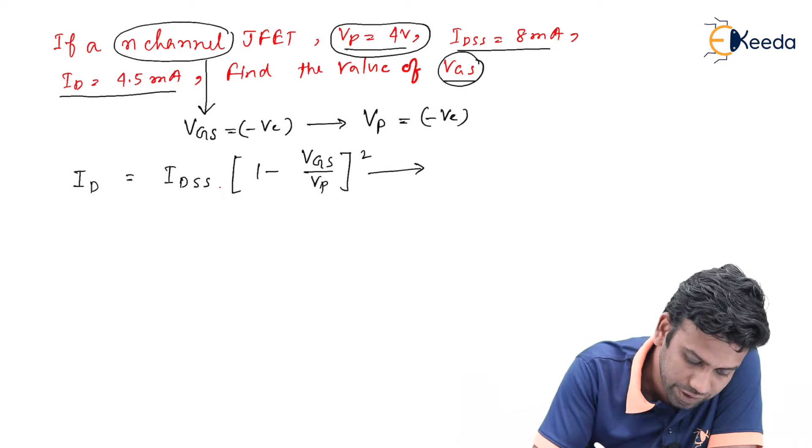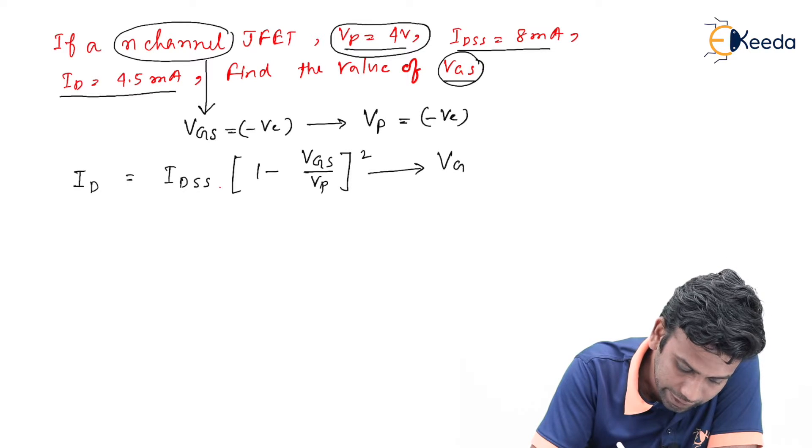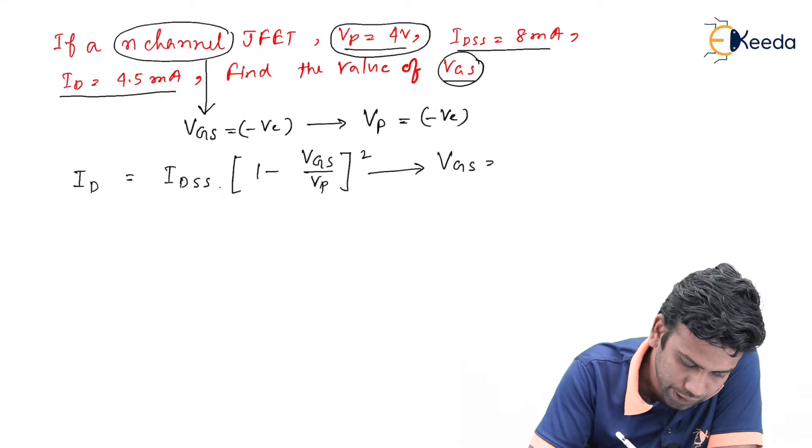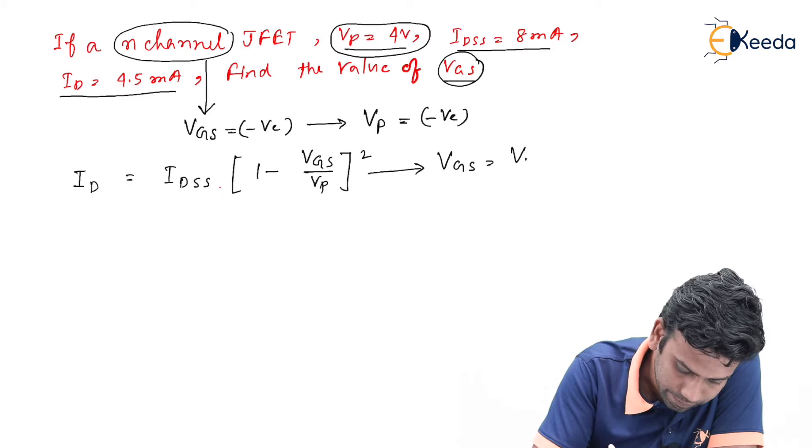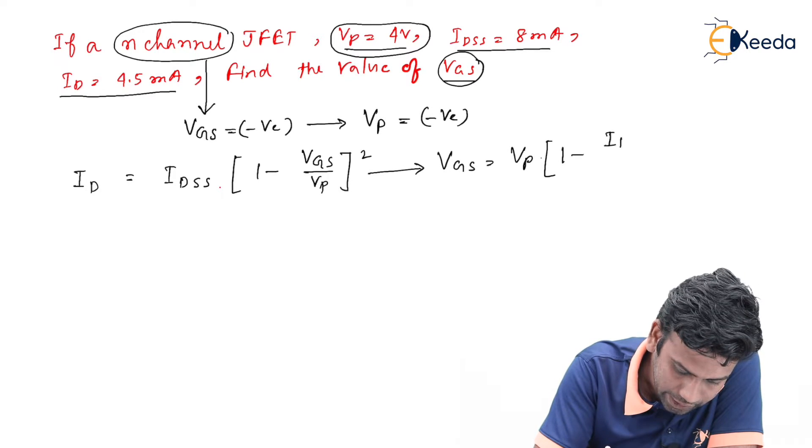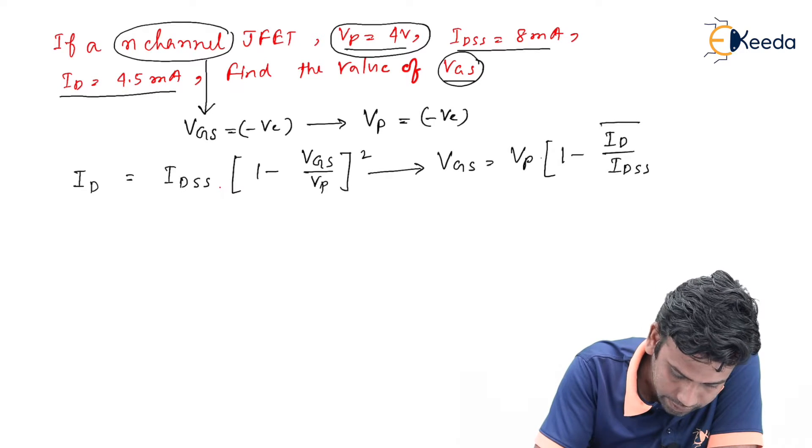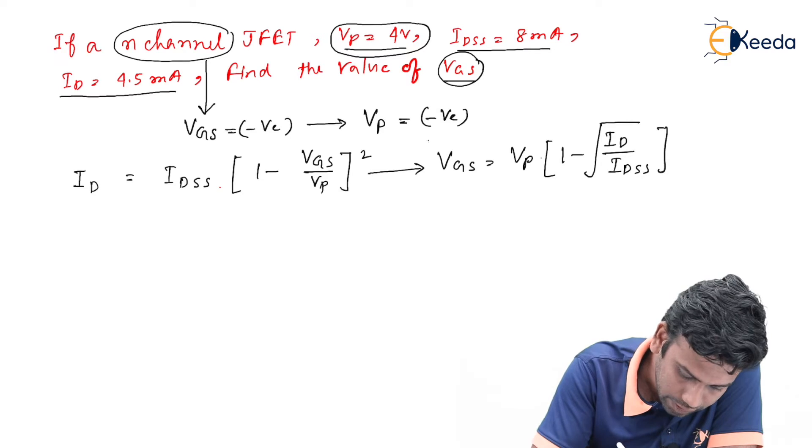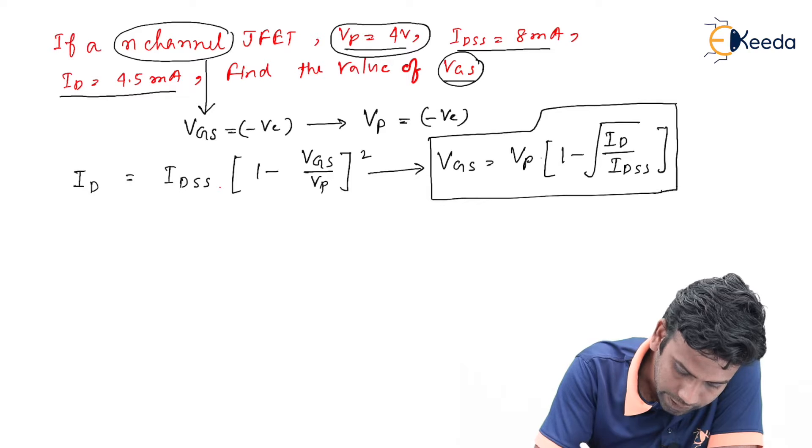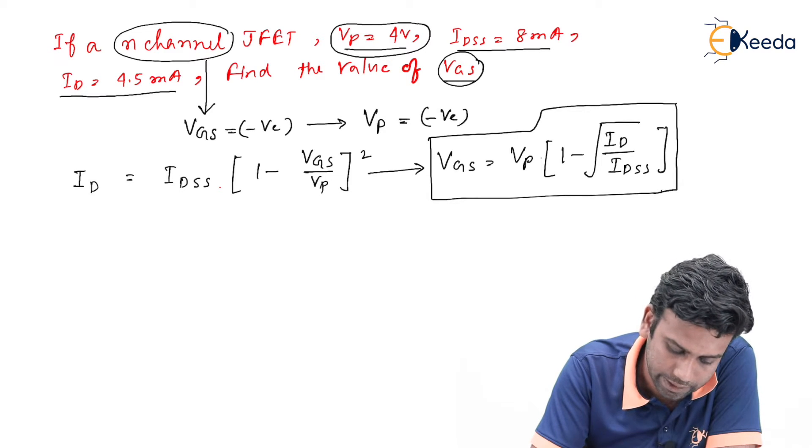We need to find the value of Vgs. Let us find the value of Vgs from this equation, which can be written as Vgs equals Vp times 1 minus square root of ID by IDSS. This is the equation of Vgs in terms of ID and IDSS.